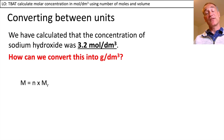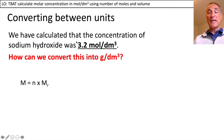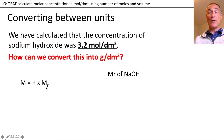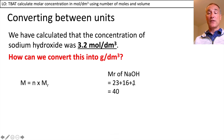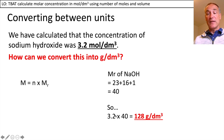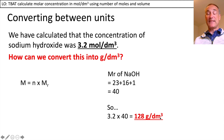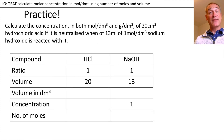Sometimes the answer is needed in grams per decimetre cubed rather than moles per decimetre cubed. So we work out the mass of 3.2 moles. Mass equals moles times molar mass. The molar mass of sodium hydroxide is 23 plus 16 plus 1, which is 40 grams. So 3.2 times 40 gives us 128 grams per decimetre cubed.